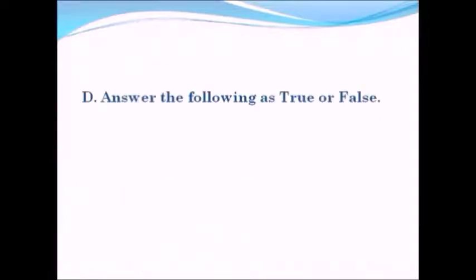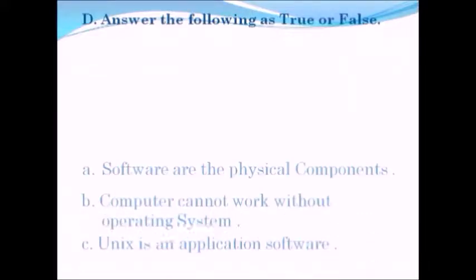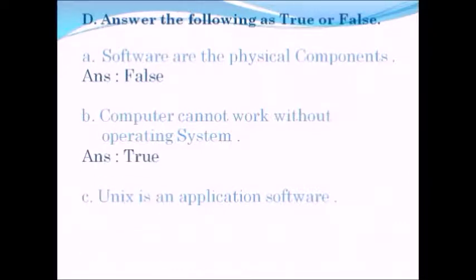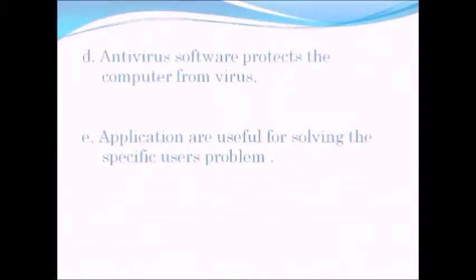Question number four: answer true or false. The first statement — software are the physical components — is false, because software are instructions and sets of programs. Next — a computer cannot work without an operating system — is true. Unix is an application software is false, because Unix is an operating system.